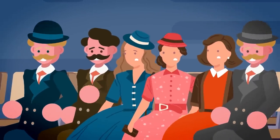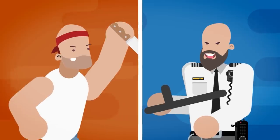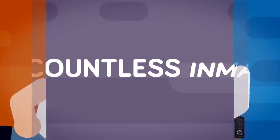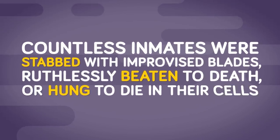Aside from the many deaths by execution, many more inmates lost their lives at the hands of fellow prisoners, and possibly even a guard or two. Countless inmates were stabbed with improvised blades, ruthlessly beaten to death or hung to die in their cells.